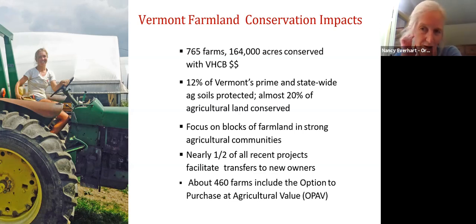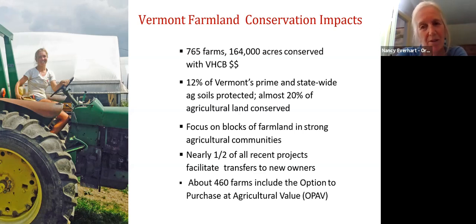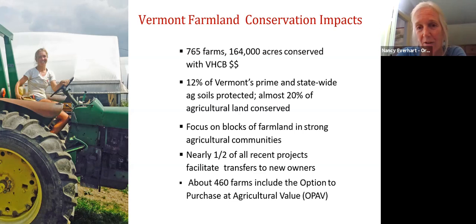Here are some statistics on what VHCB has funded — the work Vermont Land Trust or other land trusts have done with private funding isn't reflected here, but we've protected a lot of our good soils in the state. We now use the Option to Purchase at Agricultural Value on every deal we do in Vermont — Donald will talk more about that. We started using it in 2003. A great example of the kind of projects we work on is Liza McDougal of Mighty Food Farm, who had been renting land for 10 years, built up an awesome CSA, but didn't have secure tenure. Working with Donald and Vermont Land Trust, she found a farm to purchase in Shaftesbury.